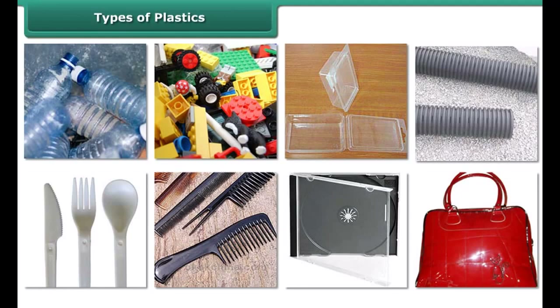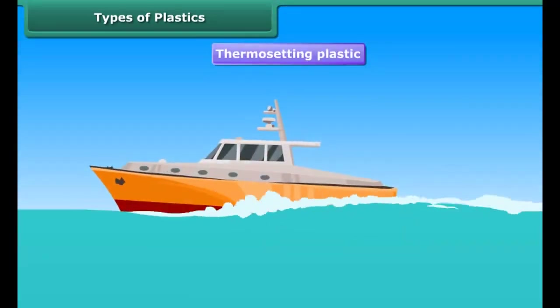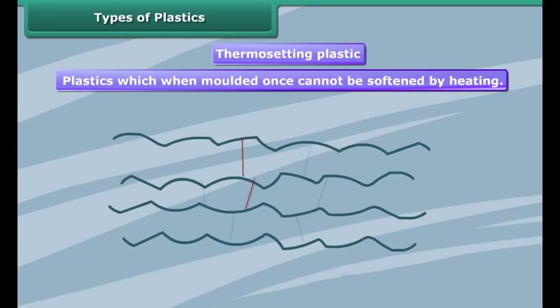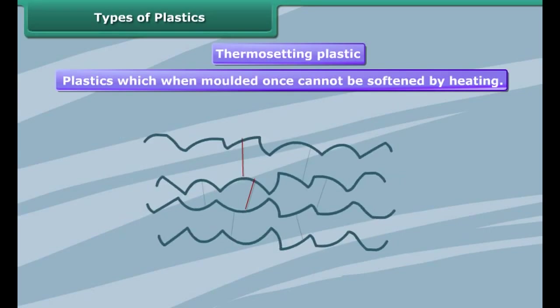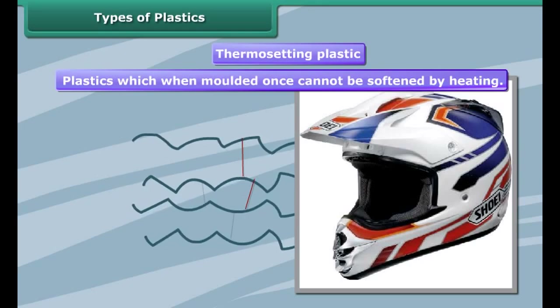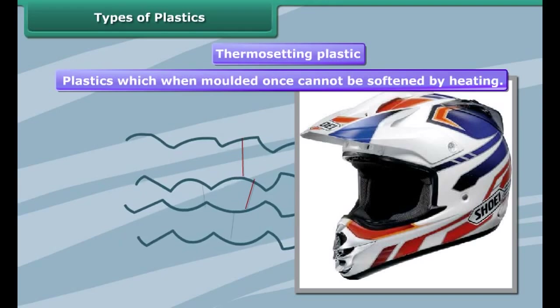Some examples of thermoplastics are polythene, polyvinyl chloride and polystyrene. These are used in manufacturing of water pipes, drain pipes, packaging, bags and bottles, toys, combs, disposable cutlery, and CD and DVD cases.